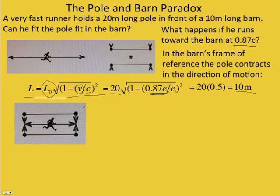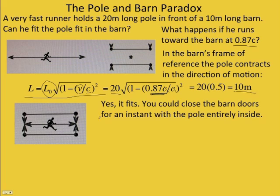To test it out, we can have the doors close instantly for an instance, and the pole is fitting in the barn. So where's the paradox? Nothing really wrong here. This is exactly what Einstein would say. So I'll let you think about it. You can pause this and think, can you come up with a problem that might not be able to be explained here?